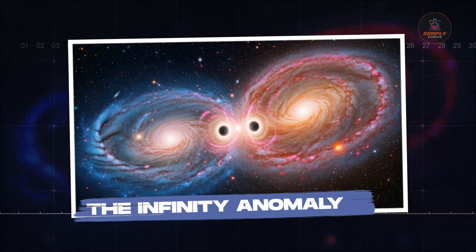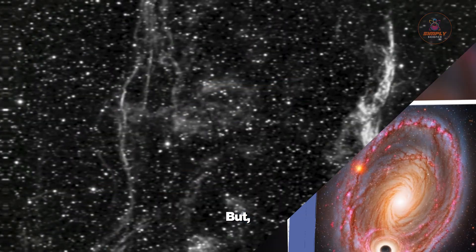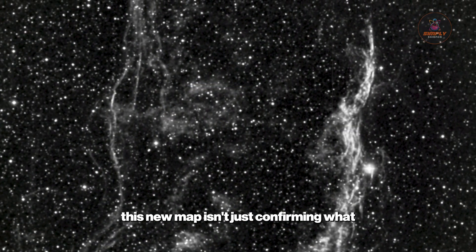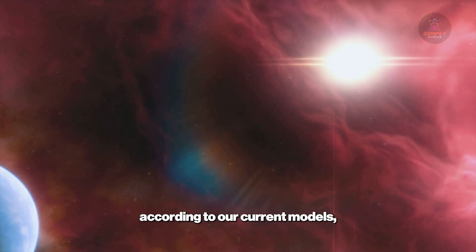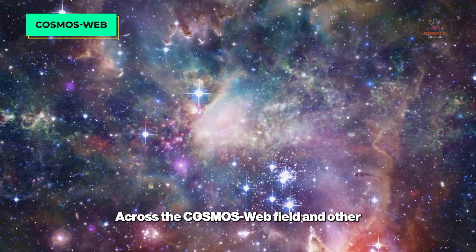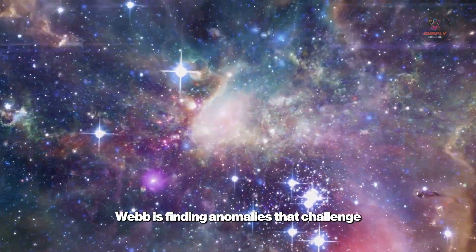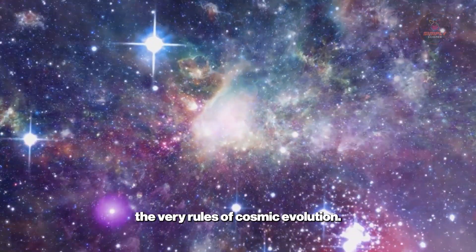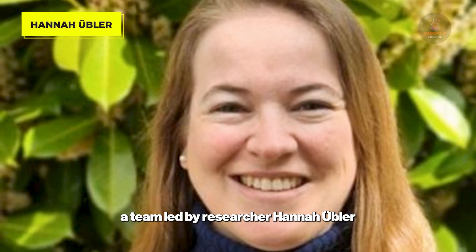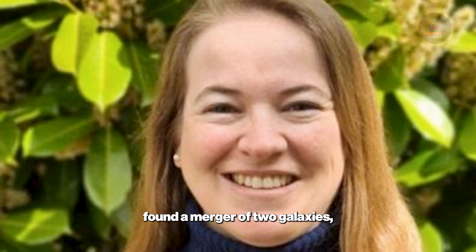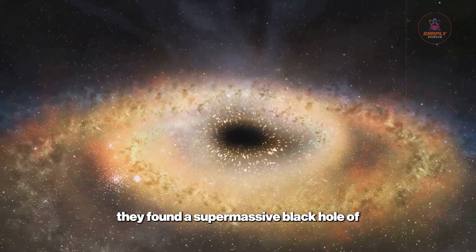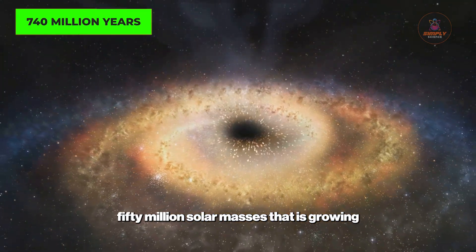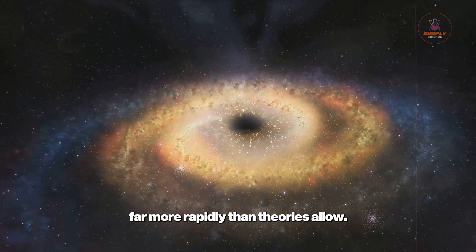The infinity anomaly. But you know, this new map isn't just confirming what we expected on a grander scale—it's actually showing us things that, according to our current models, simply shouldn't exist. Across the COSMOS-Webb field and other deep surveys, Webb is finding anomalies that challenge the very rules of cosmic evolution. For instance, a team led by researcher Hannah Übler found a merger of two galaxies, a system called ZS7, just 740 million years after the Big Bang. Inside this collision, they found a supermassive black hole of 50 million solar masses that is growing far more rapidly than theories allow.